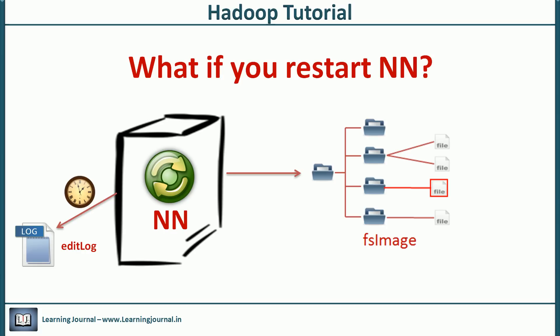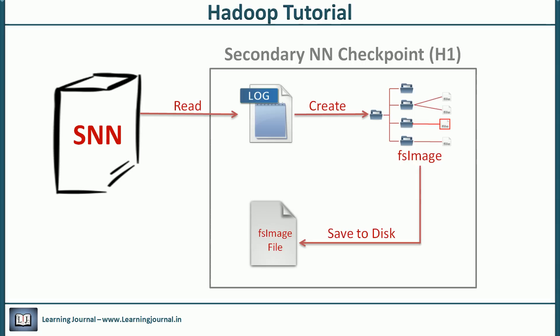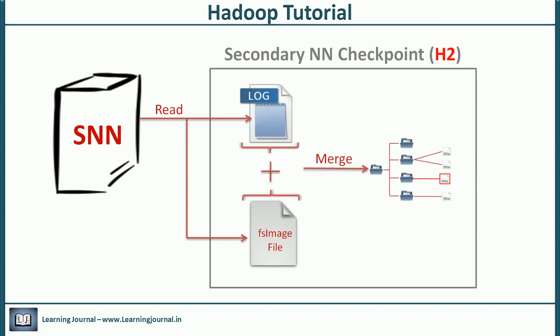We don't want our name node to take an hour to start just because it is reading edit log and making a picture of the latest file system state. The secondary name node is deployed to solve this problem. The secondary name node performs a checkpoint activity every hour. During the checkpoint, the secondary name node will read the edit log, create the latest file system state and save it to disk. This state is exactly same as the in-memory FS image. We call it on-disk FS image. Once we have the on-disk FS image, the secondary name node will truncate the edit log because all the changes are already applied. Next time, I mean after an hour, the secondary name node will read the on-disk FS image and apply all the changes from the edit log that we accumulated during the last one hour. It will replace the old on-disk FS image with the new one and truncate the edit log once again.